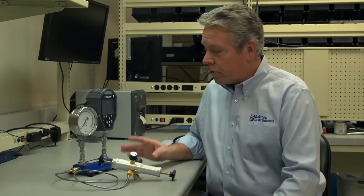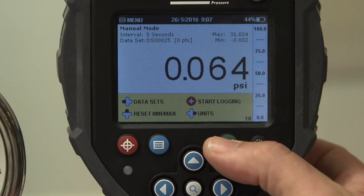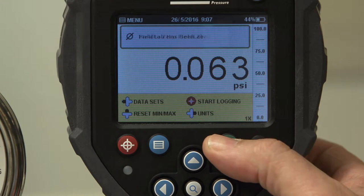Before we start our test we'll zero the Field Lab by pressing the green zero button until we see the confirmation message on screen.